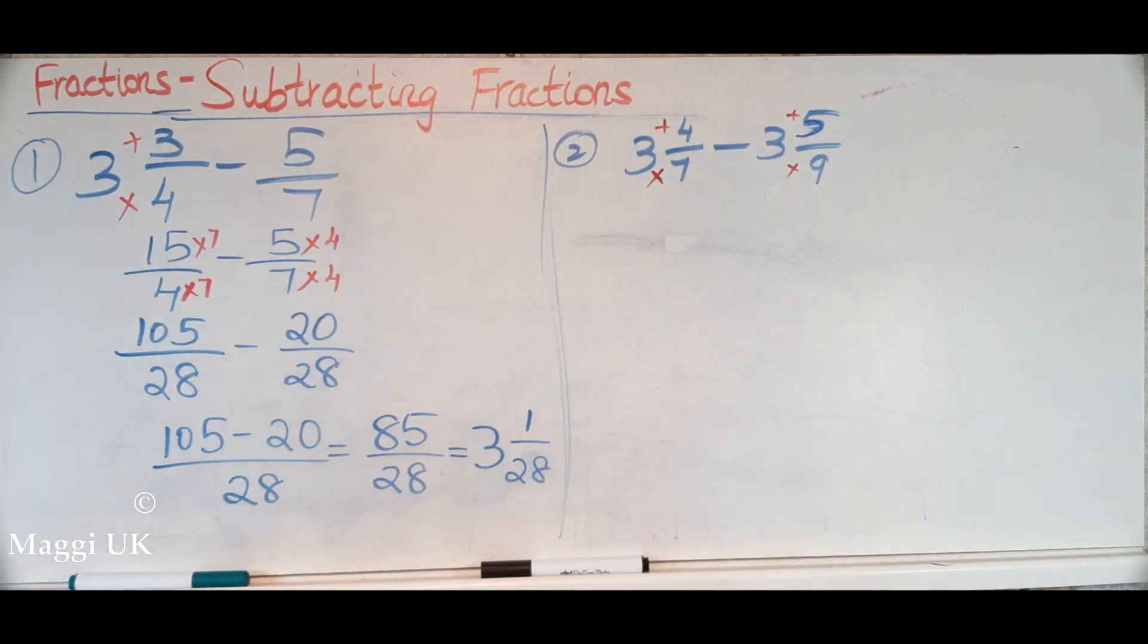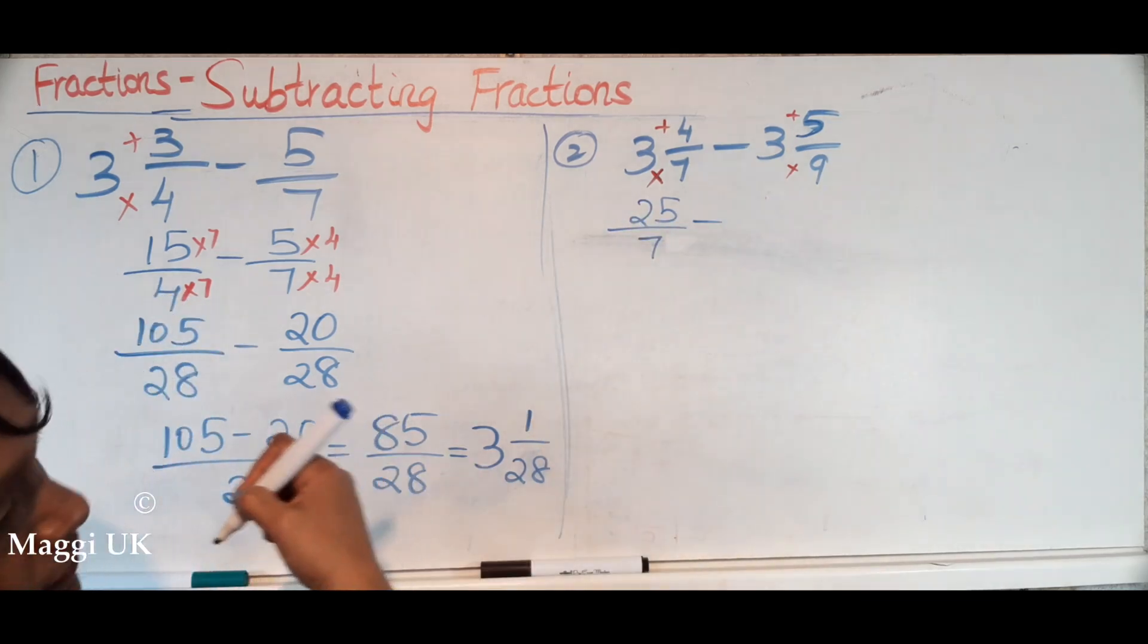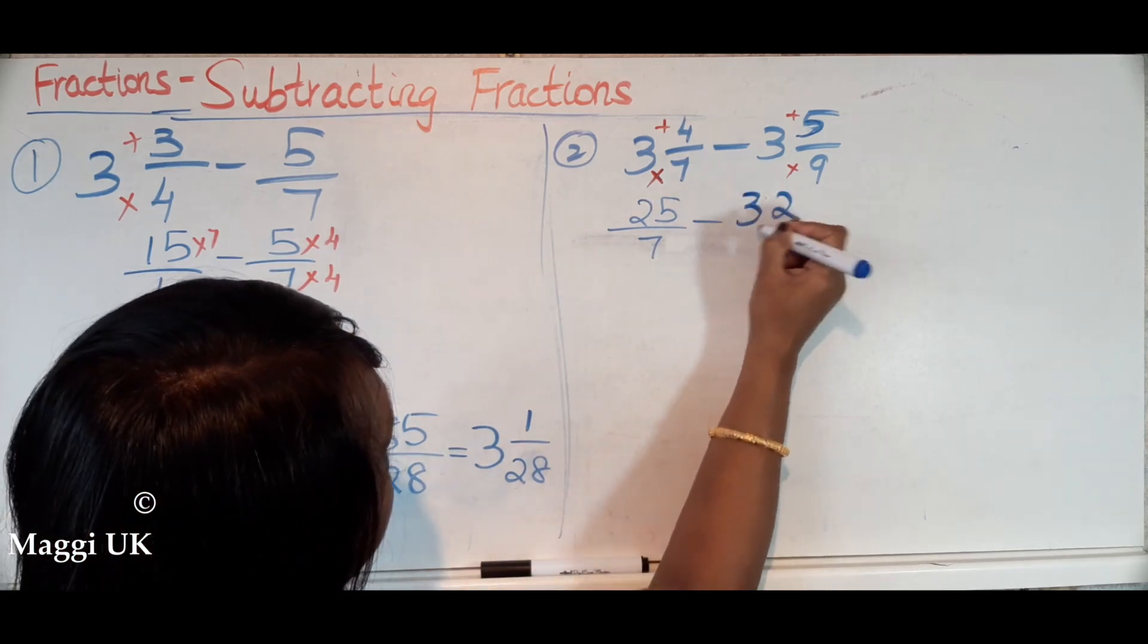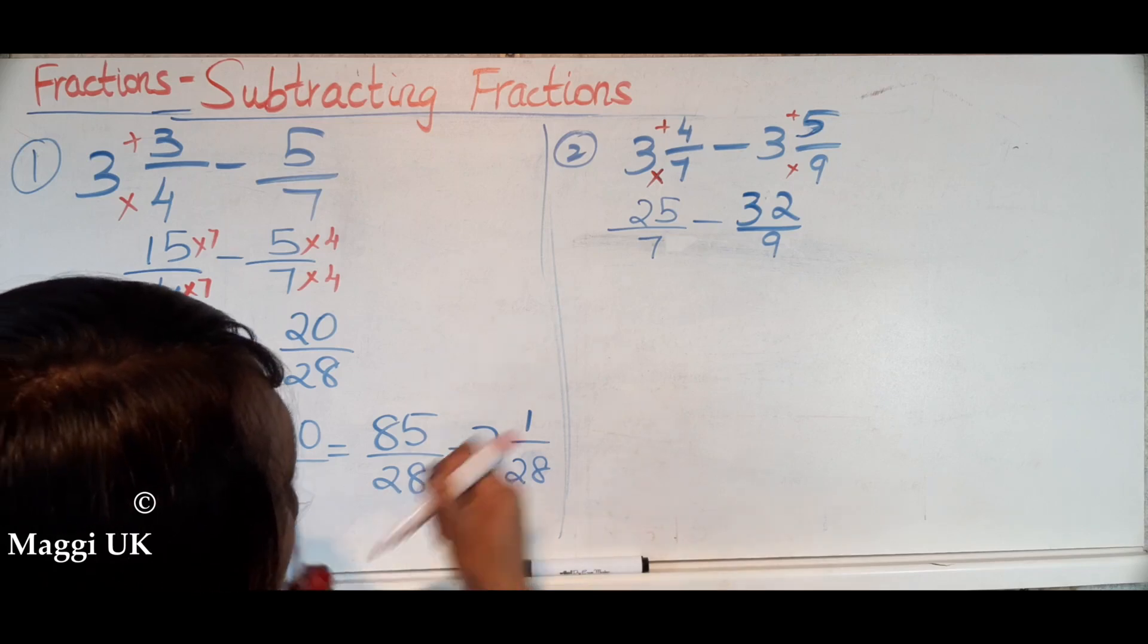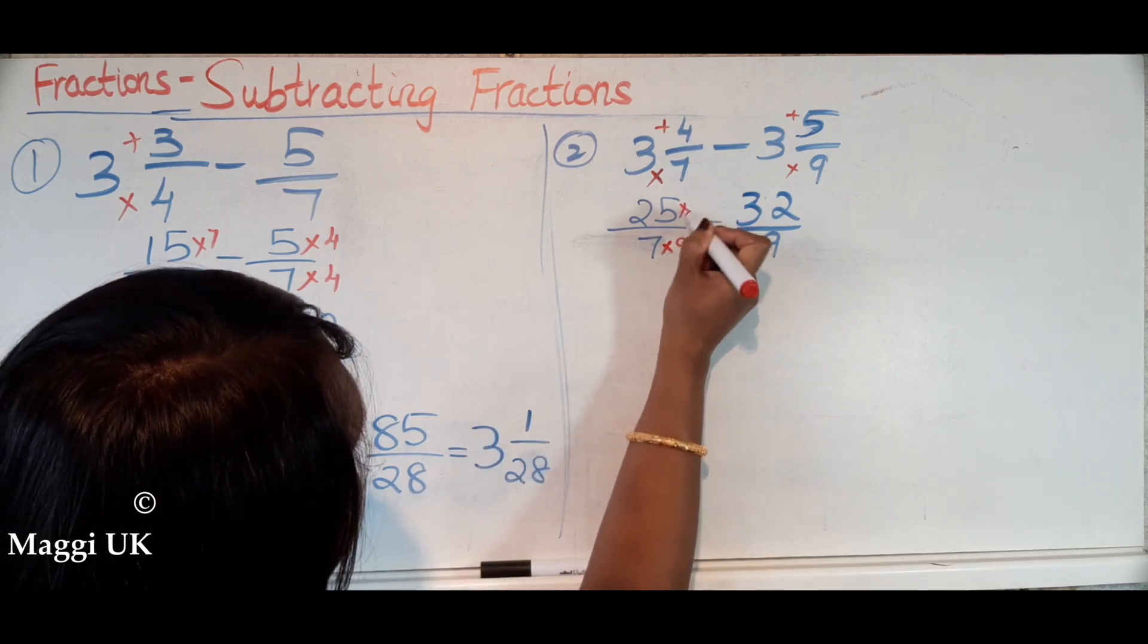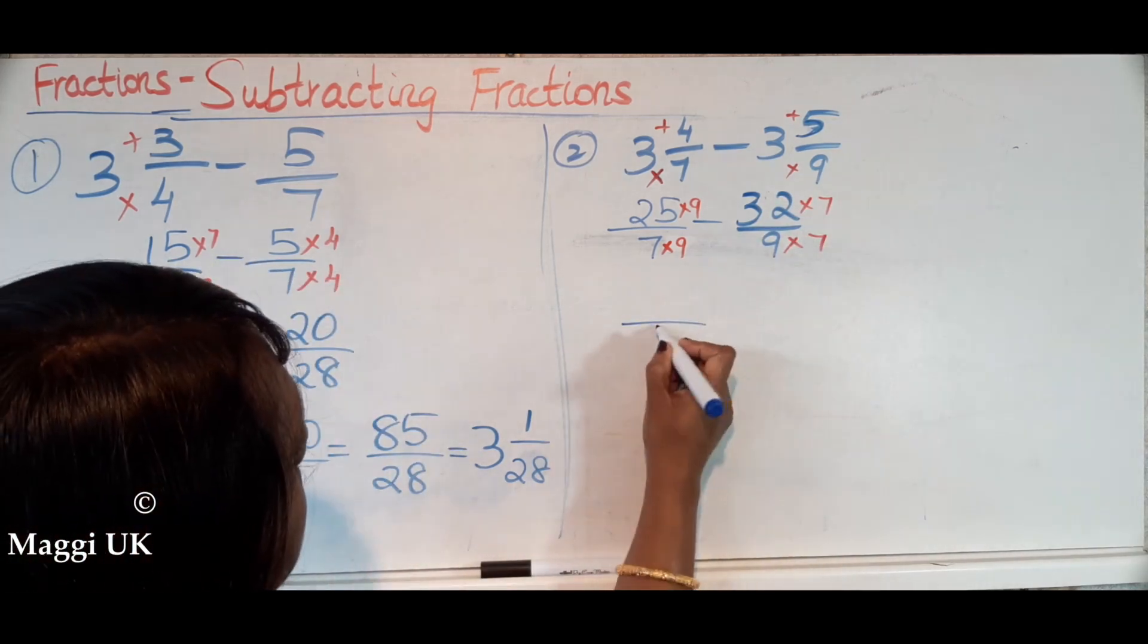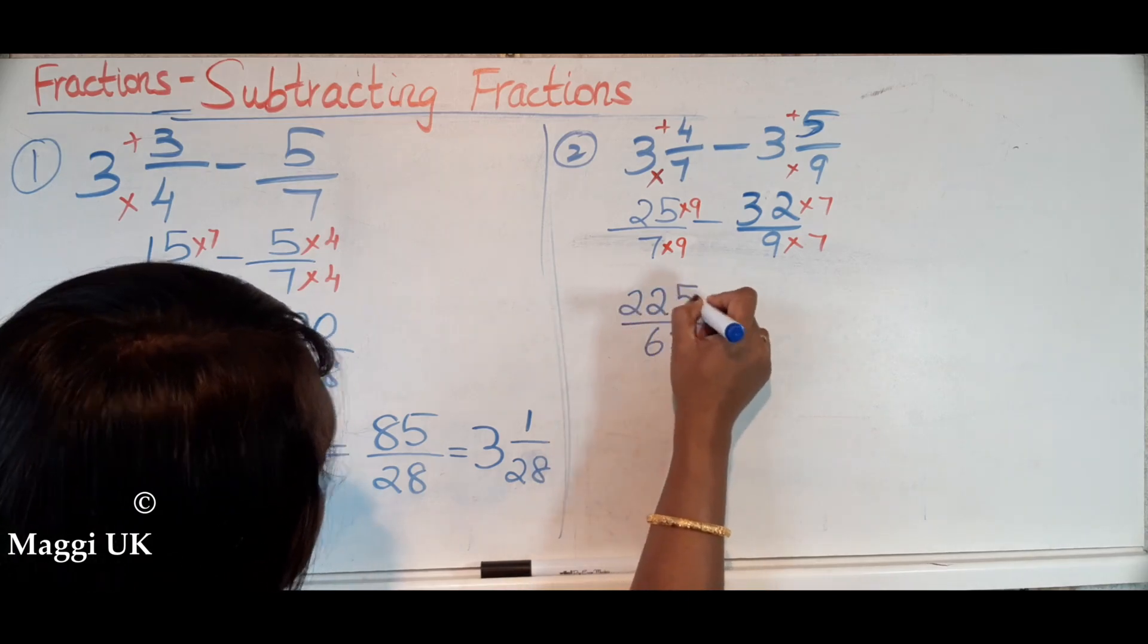Okay, so what will be the first? 3 times 7 is 21, 21 add 4 is 25 over 7. And then you have to take away 27, so that will be 32 over 9. Good, what will be your common denominator? 63. Okay good, so that means what we need to do here? Times by 9, times by 7. So that gives you 63. And then 25 times 9, I think it's 225, is that right? Recheck it and let's see. Correct, 225.